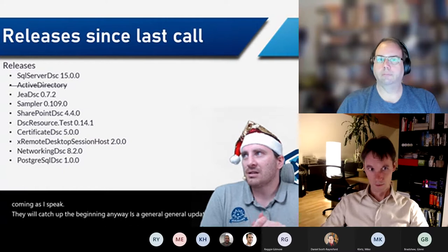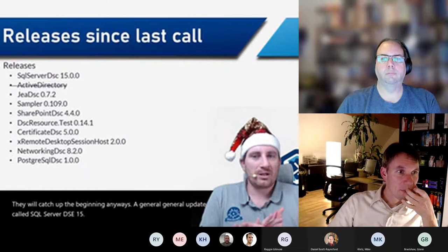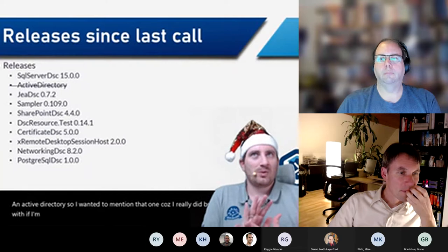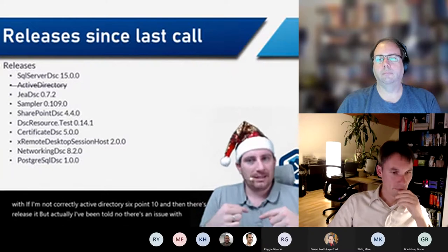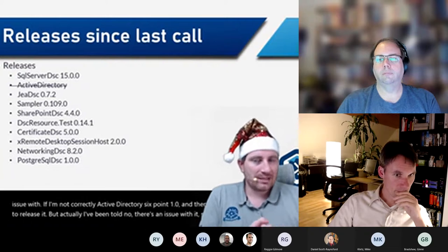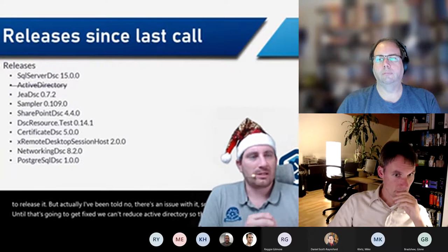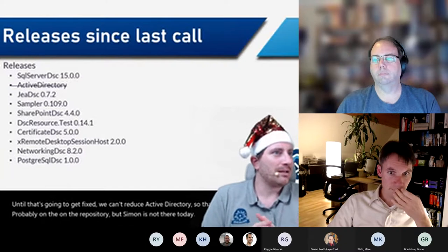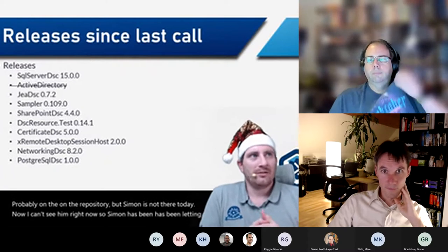So the releases covered in the slides: SQL Server DSC 15. For Active Directory — I wanted to mention that one because I released it, but there's actually an issue with Active Directory 6.1.0. I tried to release it but was told there's an issue, so I had to unlist it until it gets fixed. We can't release Active Directory right now — that's something to discuss on the repository. Simon has been letting me know about this, so I'm unlisting it for now.